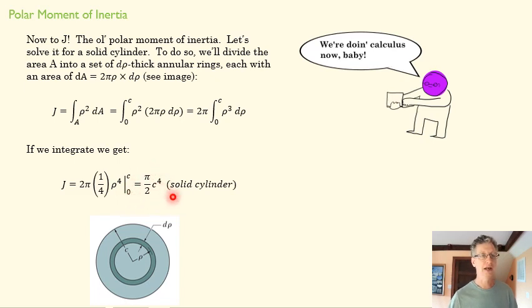Then if we go from C to 0, we end up with this guy here, π over 2, C to the fourth. And that tells us what the second moment of area of this circle is, or any circle really. It's just a function of C, of what that radius is.